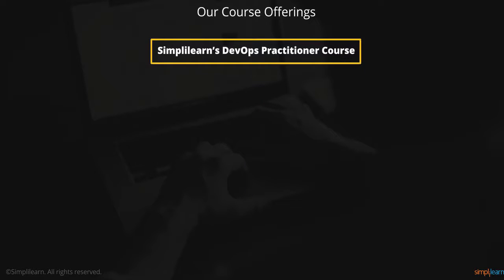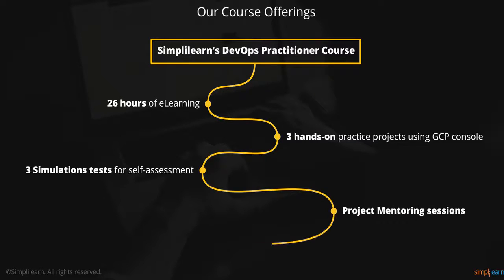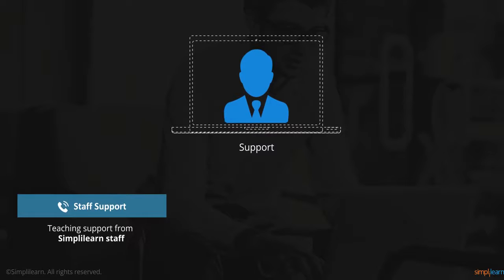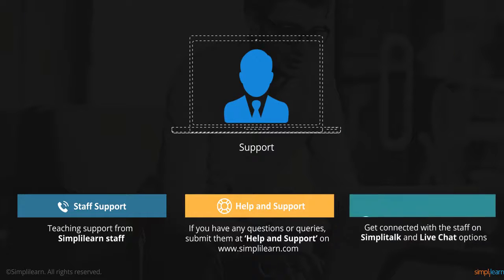Simply Learn's DevOps Practitioner course comprises 26 hours of e-learning, three hands-on practice projects using the Google Cloud Platform Compute Engine, three simulated tests for self-assessment, project mentoring sessions, and global teaching assistance (GTA). There will be teaching assistant support from Simply Learn staff at any time during the course and for the projects. Queries can also be submitted at Help and Support on www.simplylearn.com, and students can connect with staff using Simply Talk and Live Chat options.